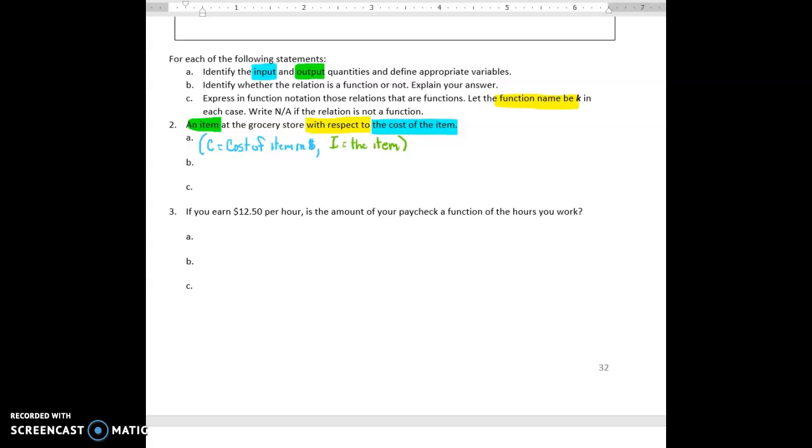Now we have to determine if this is a function or not. A function is for each input, there is only one unique output amount. If my input was $5, is there only one item I can purchase with my $5? Well, I could probably buy some candy, package of candy, or I might buy a six pack of soda. So there are multiple items that I could purchase with my $5. In other words, for each input there are multiple outputs. So we would say no, not a function.